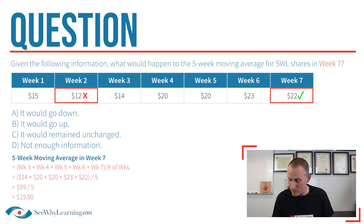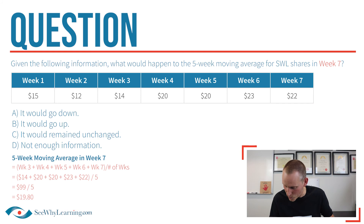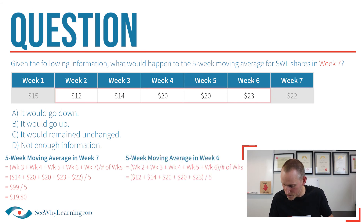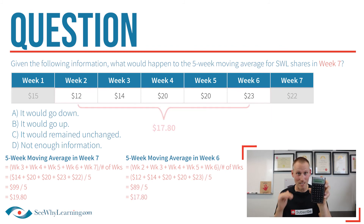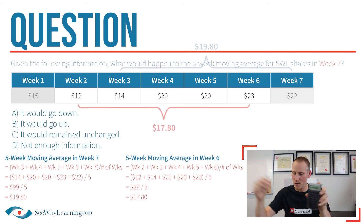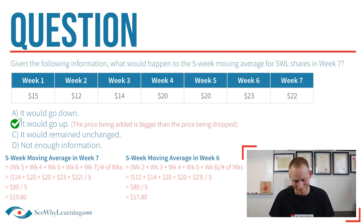So by that logic, it should be answer B — it went up. But before we choose that, let's just run the numbers quickly to be sure. The moving average in week seven was $19.80. For week six, it would be $12 plus $14 plus 20 plus 20 plus 23, which gives us $89. Divide that by five and that gives us $17.80. So it went from $17.80 in week six up to $19.80 in week seven. Let's go ahead and choose answer B, and as expected, we're right.